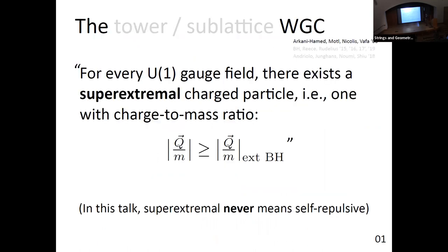Let me quickly review the weak gravity conjecture mainly to establish conventions. The canonical statement is that for every gauge field there's some super-extremal charged particle, and in this talk I always mean super-extremal to be comparing to an extremal black hole — unlike what Timo was doing in his talk — because these will not always be the same.